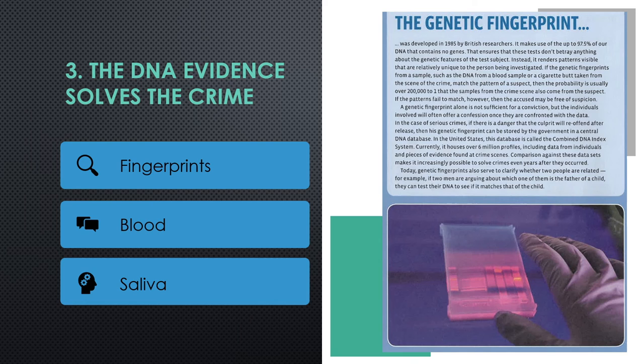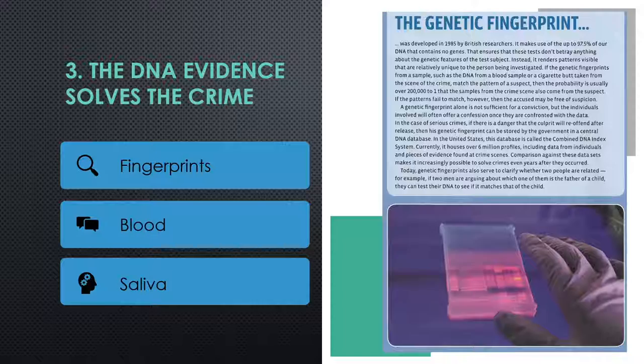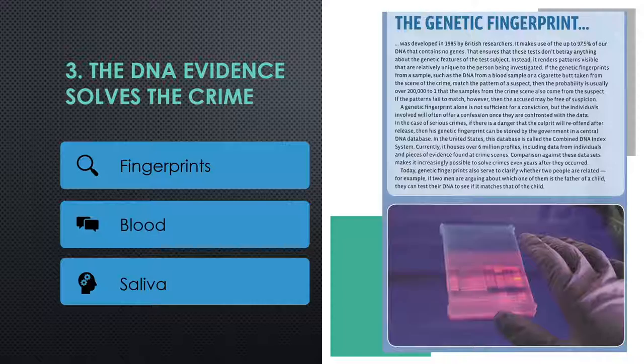And now last thing for tonight, we can use DNA evidence such as fingerprints, blood, and saliva to solve crimes. When witnesses are unable to identify a suspect by their face because they're wearing a mask or by their voice, fingerprints can help. Lab techs take drops of blood, cigarette butts, lint, hair, or saliva, and study those isolated DNA samples to solve the case.